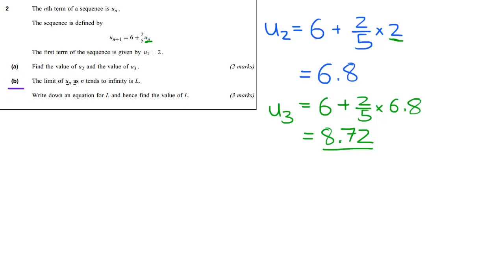But nevertheless, it says the limit of U of N, as N tends to infinity. So as this thing gets as high as infinity, the limit is L. It tells you the limit is L. Write down an equation for L and hence find the value of L. So to me that doesn't make any sense because in Core 2 you haven't done limits yet. You do that if you do university maths.